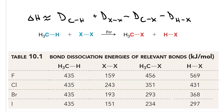The constant, regardless of which halogen you react with, is the methyl-hydrogen bond that is broken — 435 kJ per mole. The strength of the halogen-halogen bond, X-X, varies widely depending on which halogen you're using: 159 for F-F, 243 for Cl-Cl, 193 for Br-Br, and 151 for I-I.